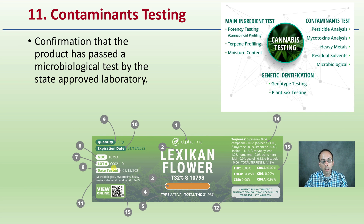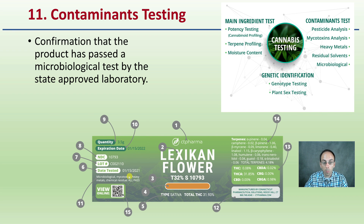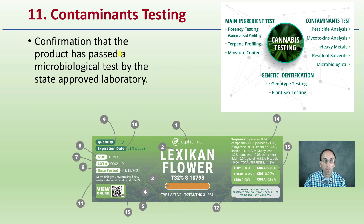Number eleven is contaminant testing — confirmation that the product has passed microbiological testing by the state laboratory, as well as mycotoxins, heavy metals, and chemical residues. Here we see all passed. Now it's great to see on the label, but we also want to be confirming this on the analytical report.